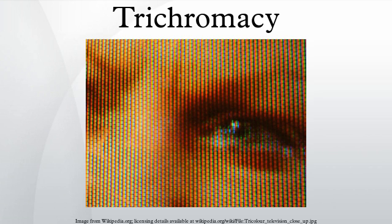Trichromatic color vision is the ability of humans and some other animals to see different colors, mediated by interactions among three types of color-sensing cone cells. The trichromatic color theory began in the 18th century when Thomas Young proposed that color vision was a result of three different photoreceptor cells. Hermann von Helmholtz later expanded on Young's ideas using color matching experiments, which showed that people with normal vision needed three wavelengths to create the normal range of colors. Physiological evidence for trichromatic theory was later given by Gunnar Svaetichin.